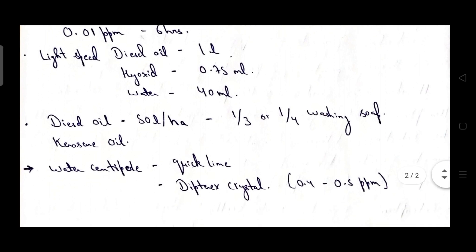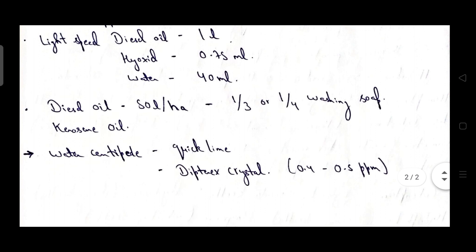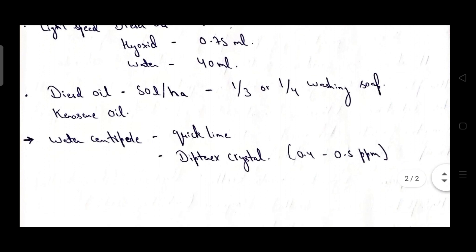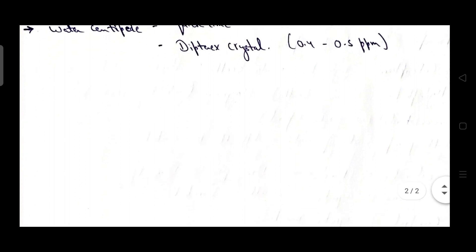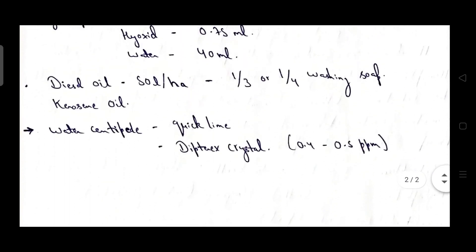Diesel oil 50 liter per hectare along with immersion with 1/3 or 1/4 portion of washing soap. Kerosene oil is also used. Water centipede can be killed by using quick lime as well as Dipterex crystal in the form concentration of 0.4 to 0.5 ppm. So these were the methods to control aquatic insects and we discussed about aquatic insect orders.